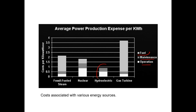The bars are split according to people, maintenance, and operation. For hydro, there is basically no fuel cost, and the operation and maintenance cost makes up the majority of the cost of running the plant. The total cost for hydro is less than the other three types, making it a very cheap form of power.